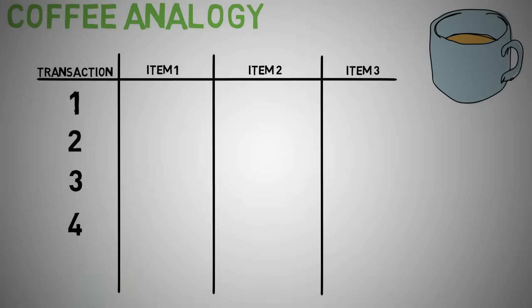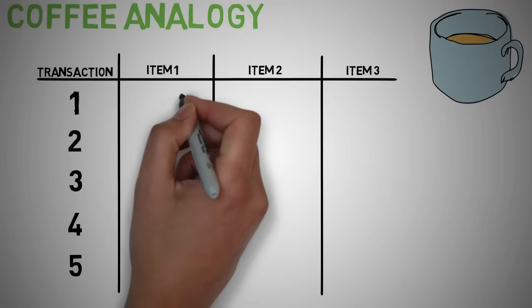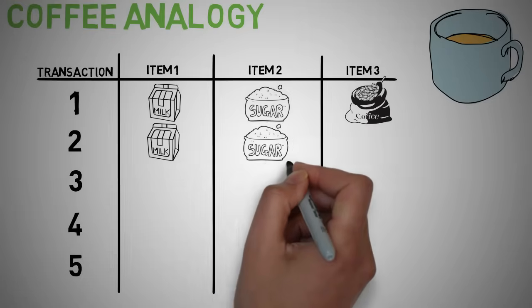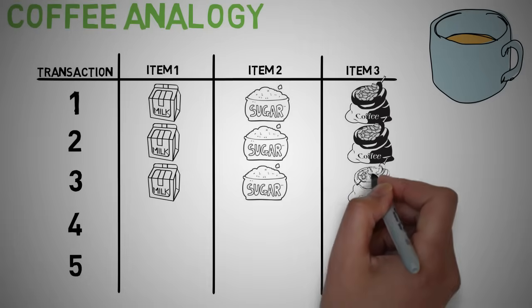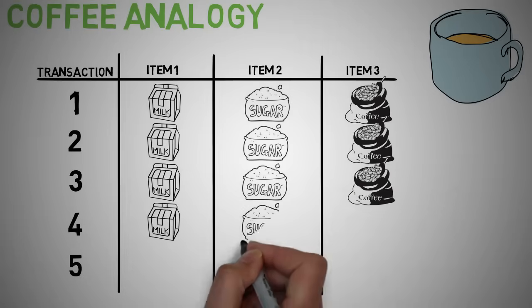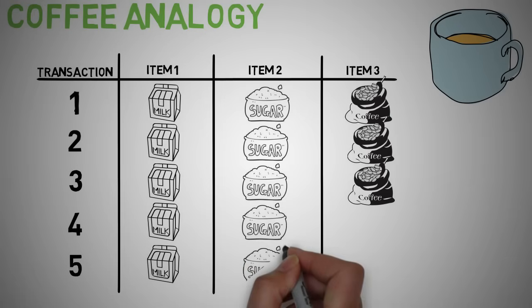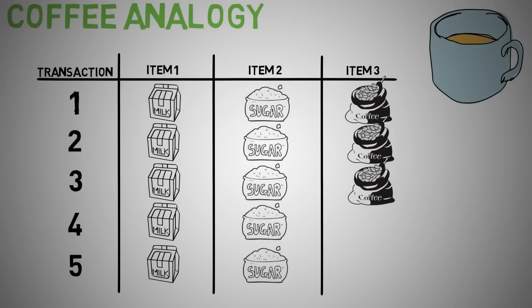The association rules for this dataset — we can write the following association rules. Rule 1: if milk is purchased, then sugar is also purchased. Rule 2: if sugar is purchased, then milk is also purchased. Rule 3: if milk and sugar are purchased, then coffee powder is also purchased in 60% of the transactions.